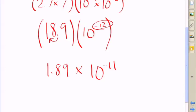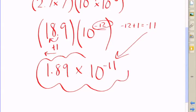But because we moved the decimal once to the left, we have to add 1 to the exponent of the base of 10 to account for that move because we've moved one place value. So our final answer is going to be 1.89 times 10 to the negative 11th.